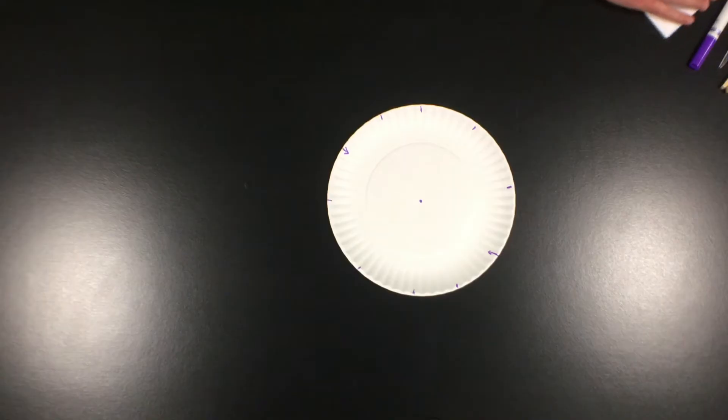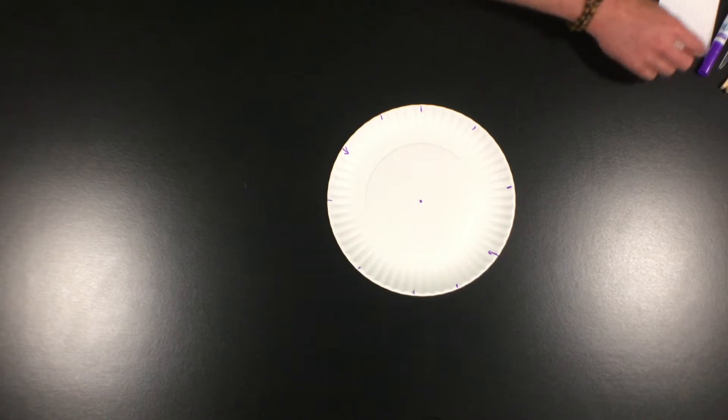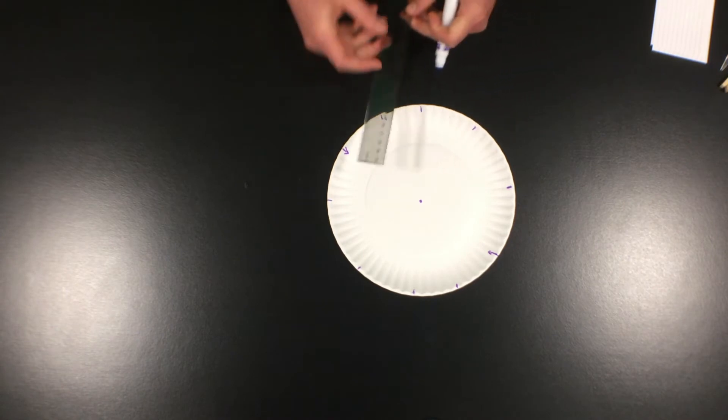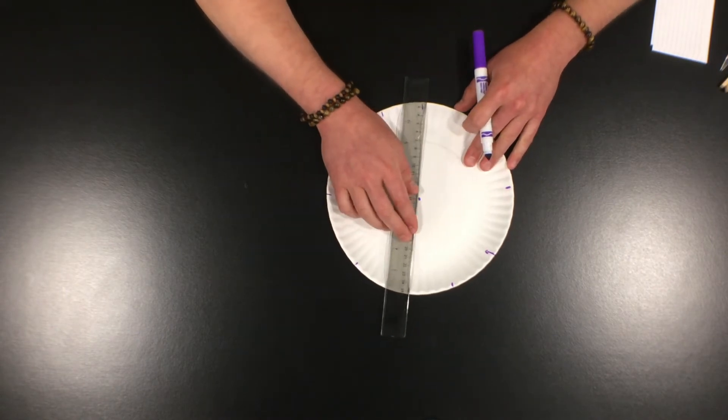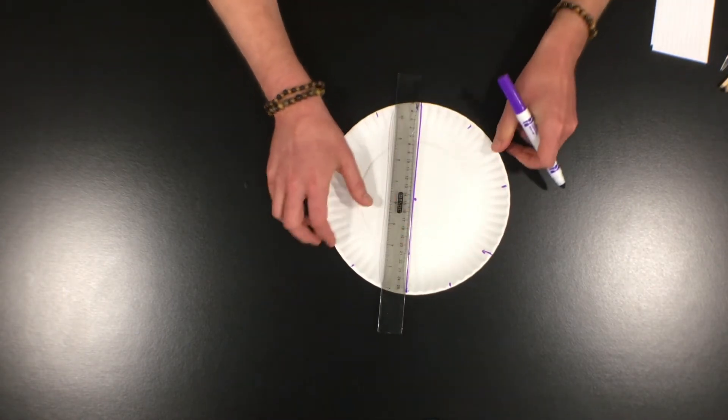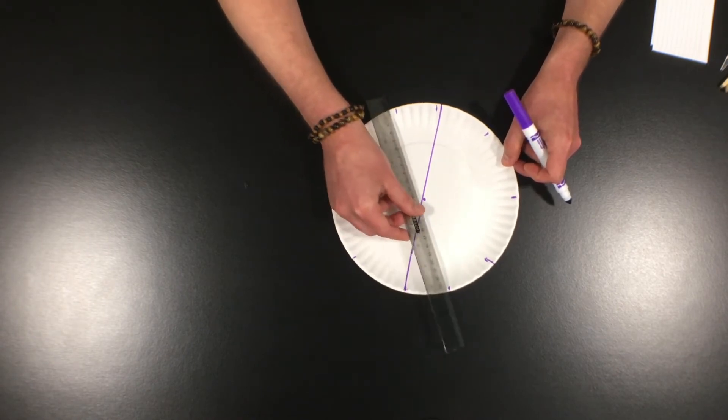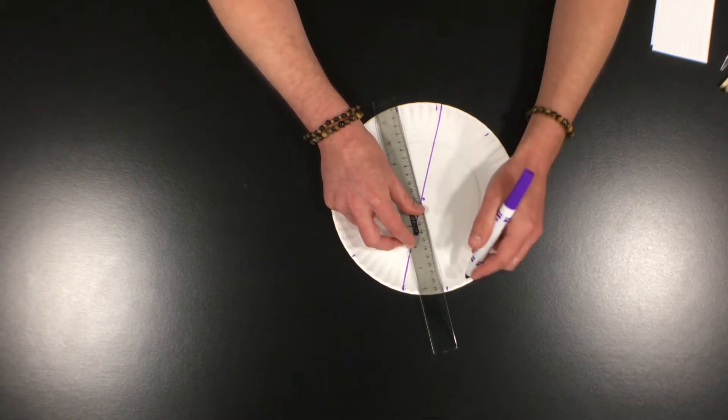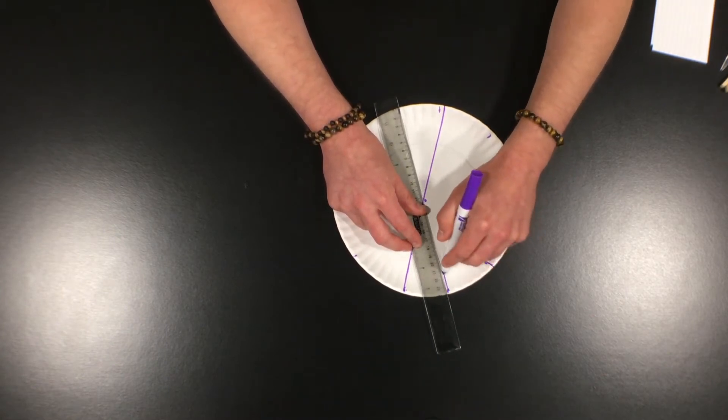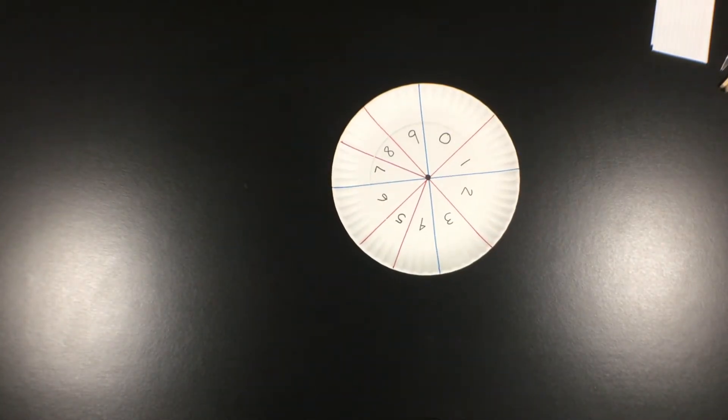The first thing you're going to do is take your paper plate and draw some lines. First, the first line you draw is going to be straight down the center of your paper plate. Now look at the two halves of your paper plate. You're going to need five more sections on each half. Don't worry if they're all the same, it doesn't have to be perfect. Once you get the lines drawn, you're going to label it with the numbers zero through nine like we've done here.